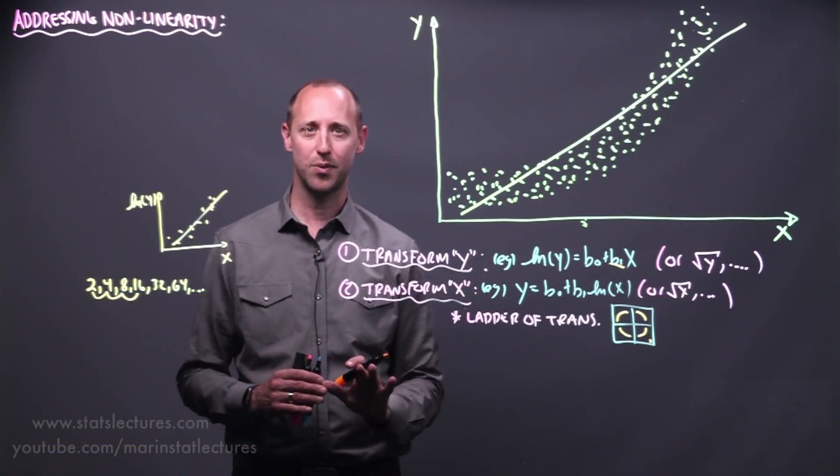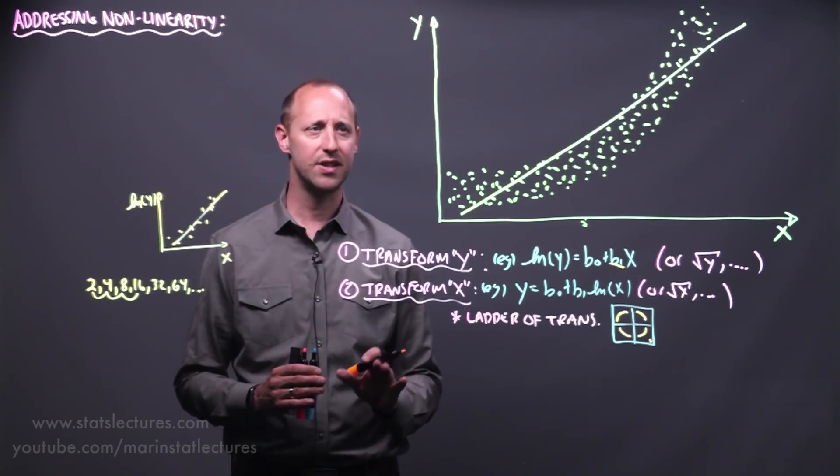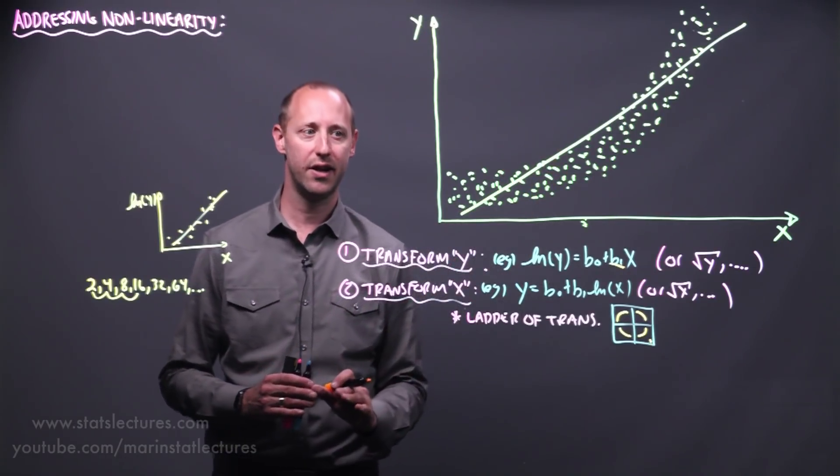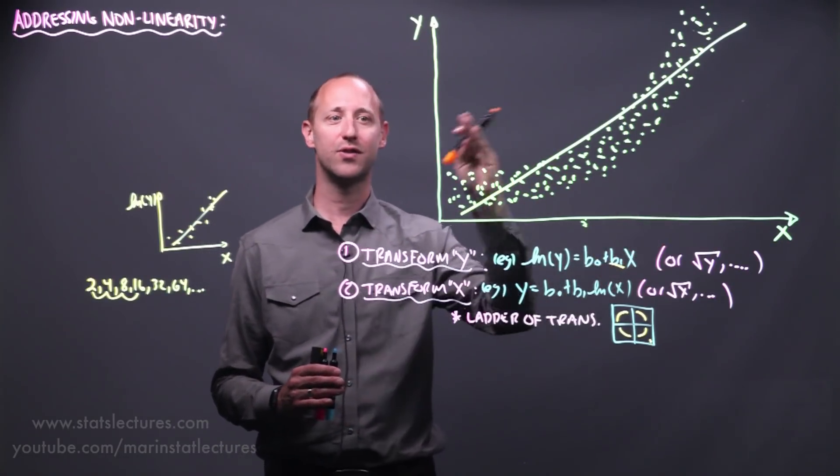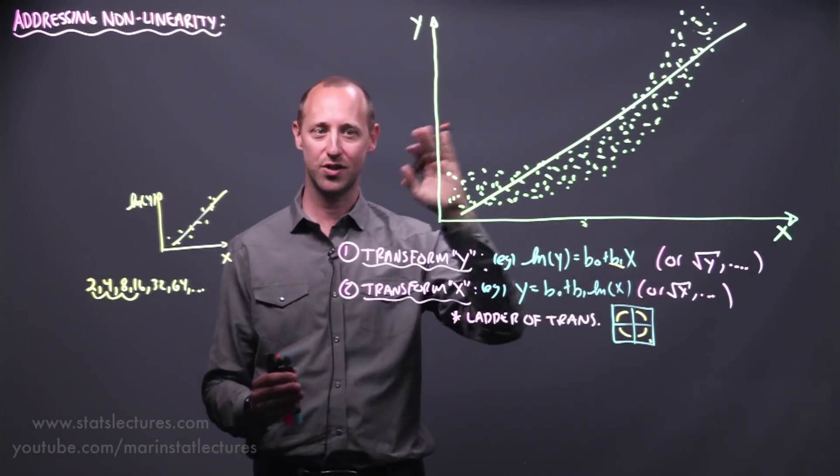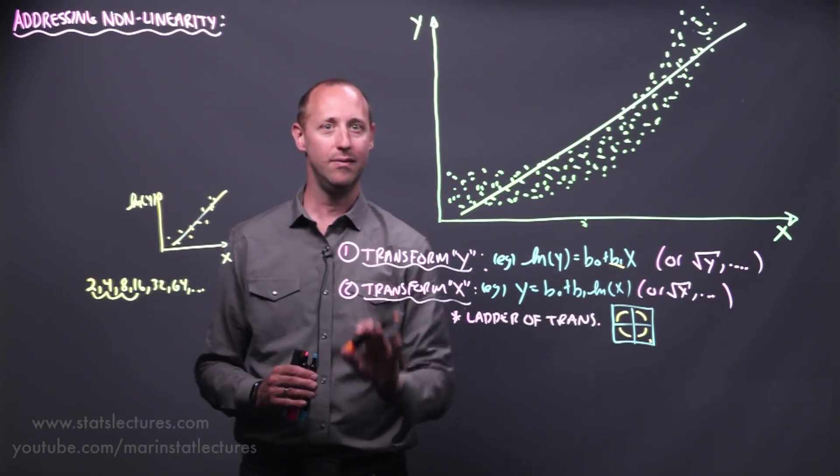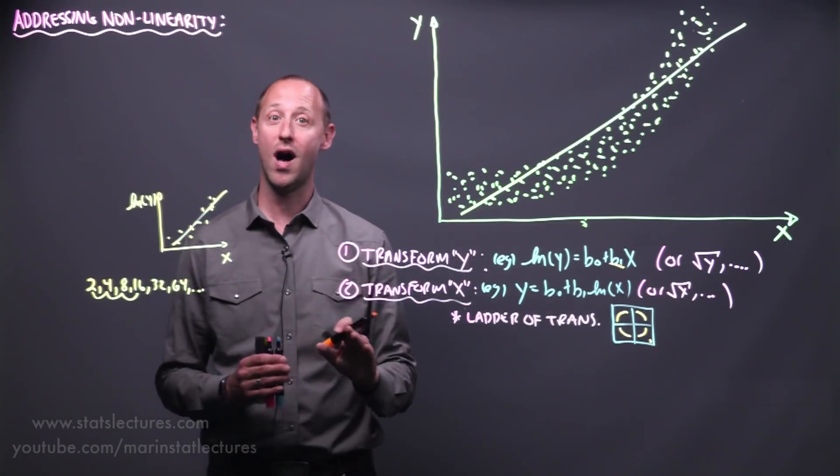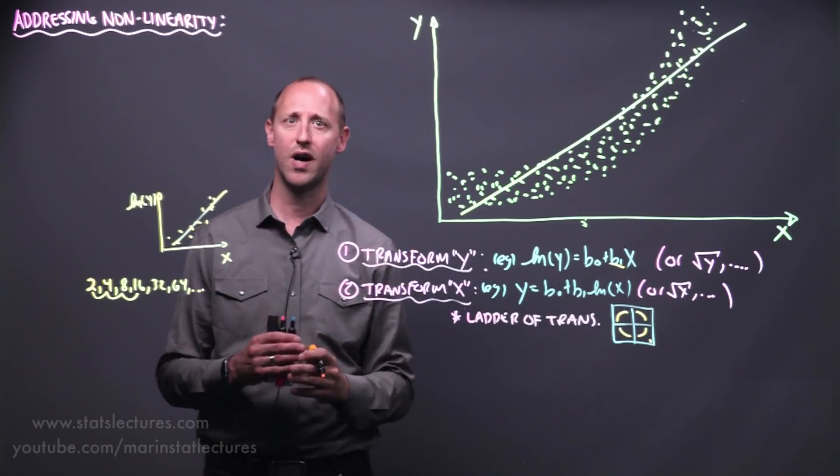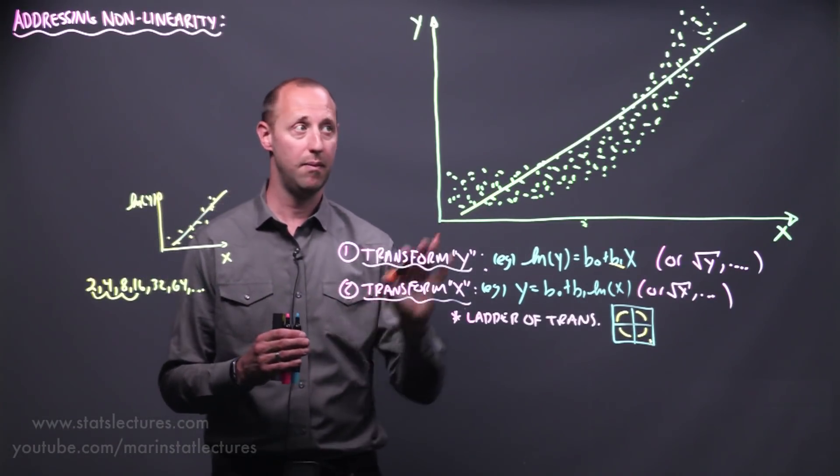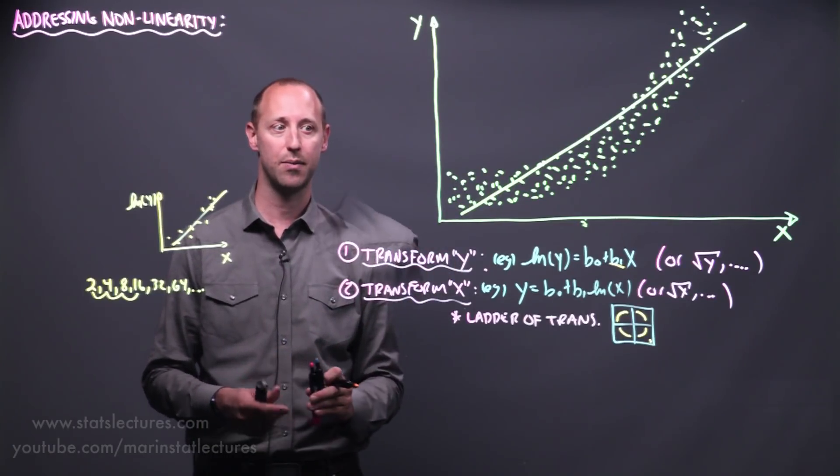So what I'd suggest, if you want to explore these a bit more, get your hands on a data set, some that have different non-linearities. Try looking at plots of x versus y, log of x versus y, x versus log of y, and so on, and see how when you take y versus log of y versus square root of y in these different transformations, how it affects the shape that you see in the scatter plot.